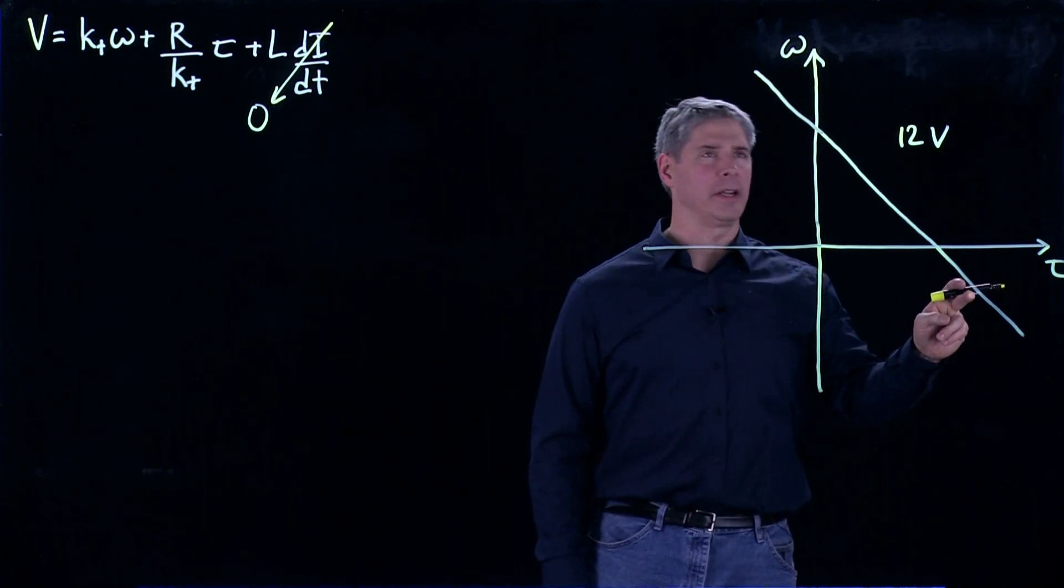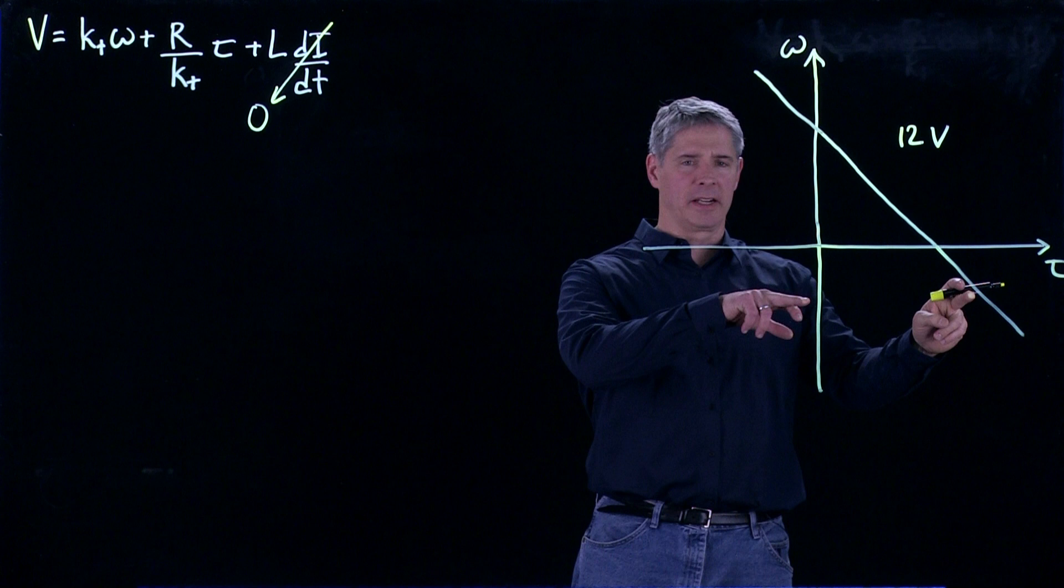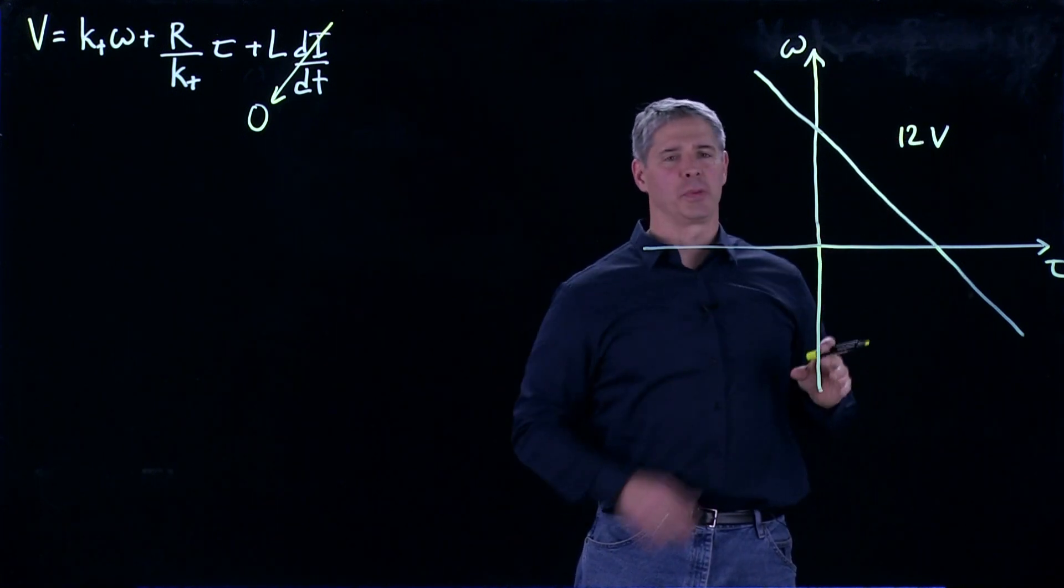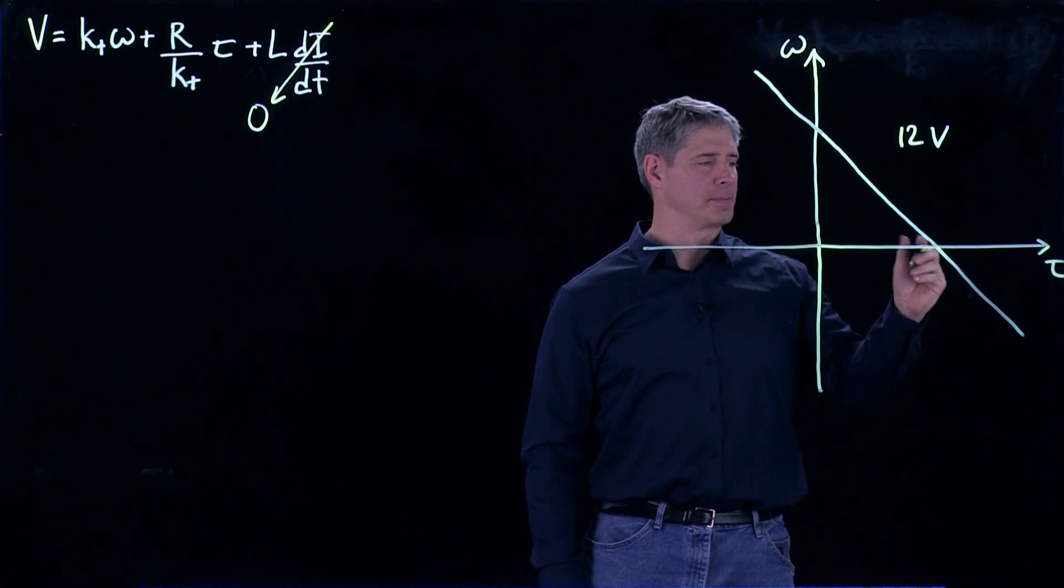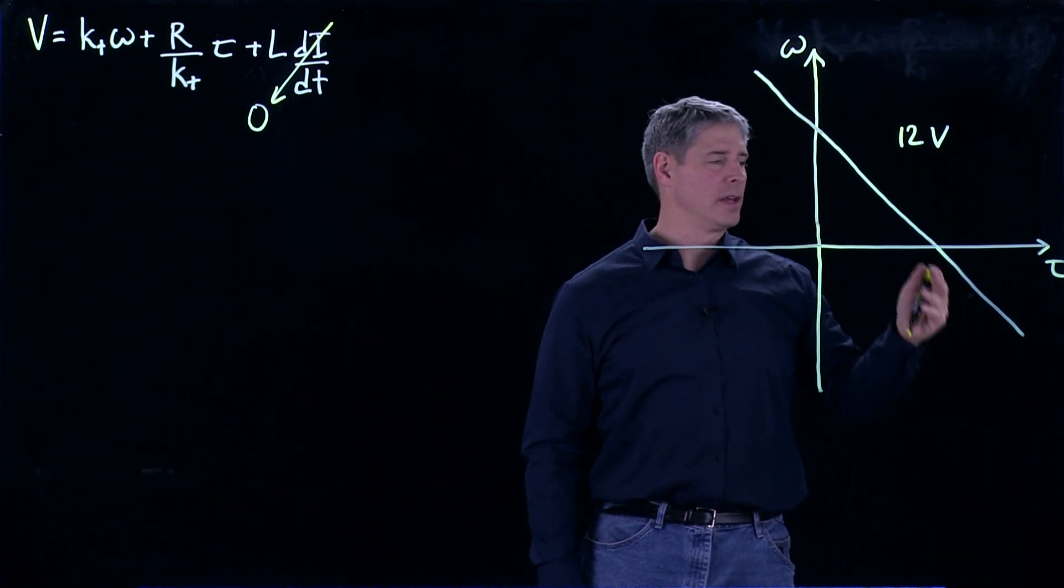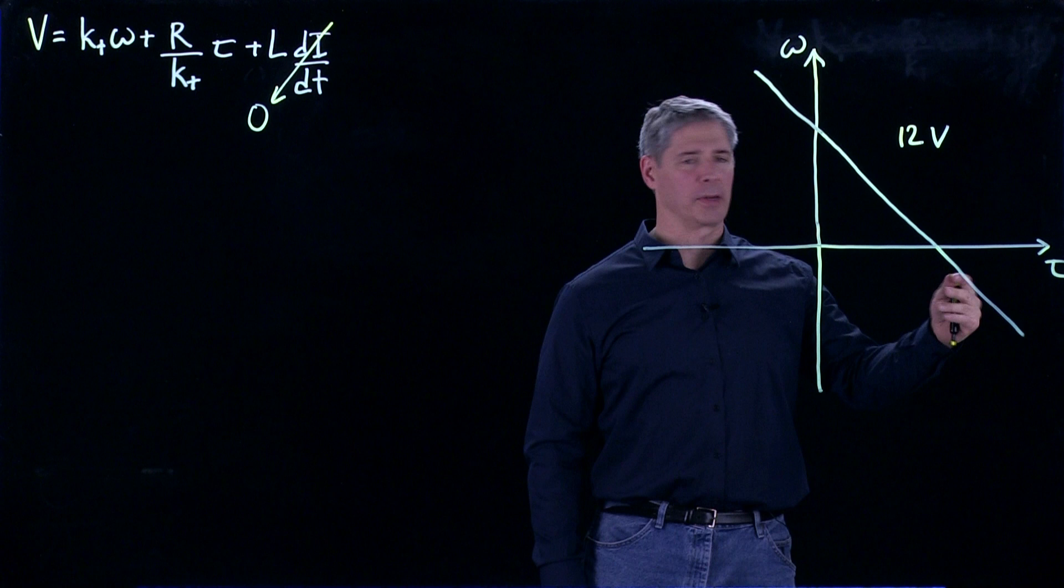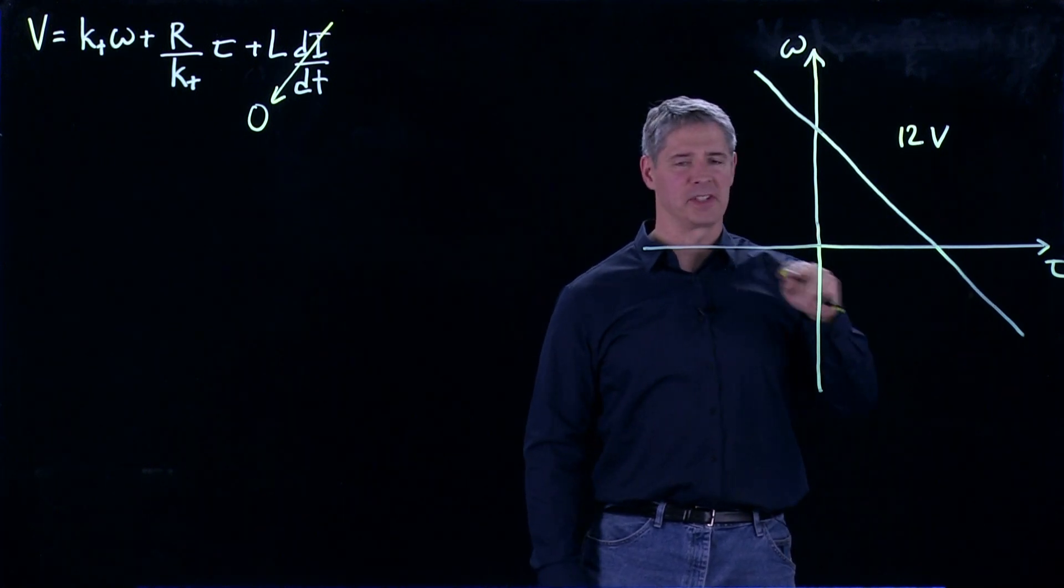And now we can talk about different operating points that are outside of this top right quadrant. For example, an operating point here means that we are spinning with a negative speed, and then we apply 12 volts to the motor, and we actually create a larger torque here than is possible at stall. So we create a torque that will try to speed the motor up from its negative speed.